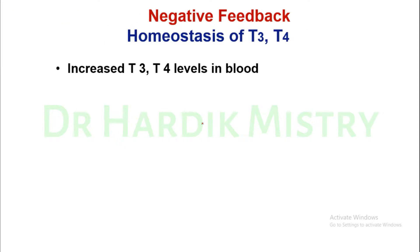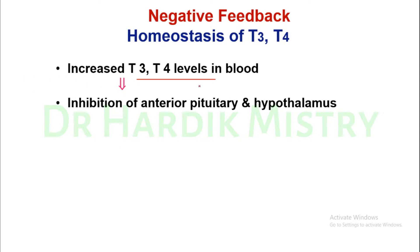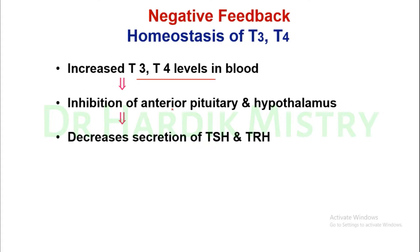Second example of negative feedback: homeostasis of T3 and T4, the thyroid hormones. Once there is an increase in T3 and T4 levels in the blood, there is inhibition of the anterior pituitary and hypothalamus, leading to decreased secretion of TSH from the anterior pituitary gland and TRH from the hypothalamus. TRH is the thyroid releasing hormone and TSH is the thyroid stimulating hormone.